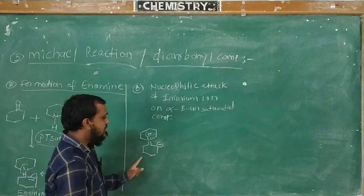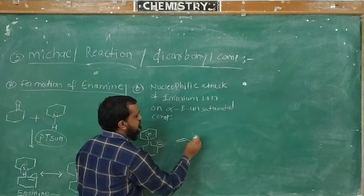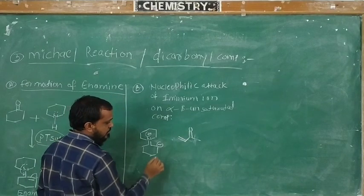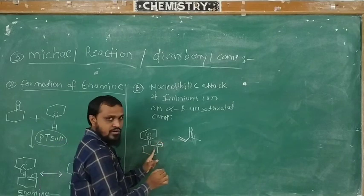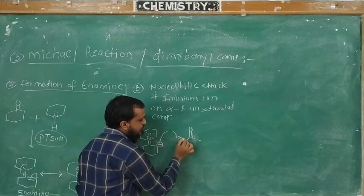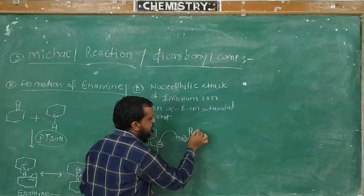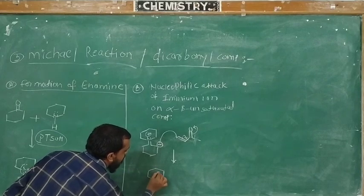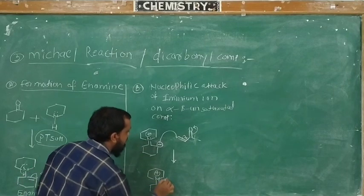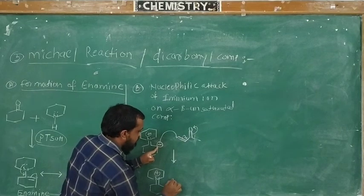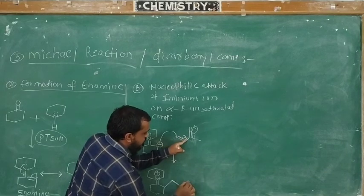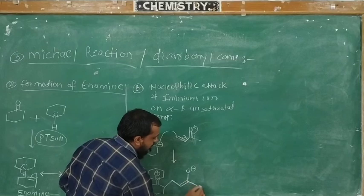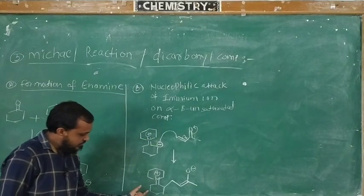This is the structure of the iminium ion. This iminium ion can act as an alpha,beta-unsaturated compound. The negative charge on carbon attacks on this carbon atom; simultaneously, the pi bond shifts here and this pi bond shifts towards the oxygen. And we will get this type of intermediate. One bond will be regenerated, then this bond — this pi bond shifted towards this, and here oxygen becomes negative. One pi bond will be regenerated, so we will generate this type of intermediate.